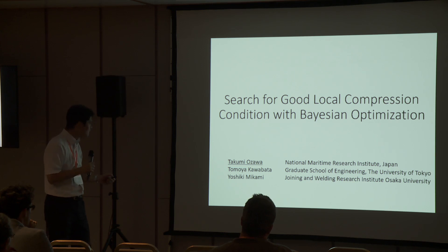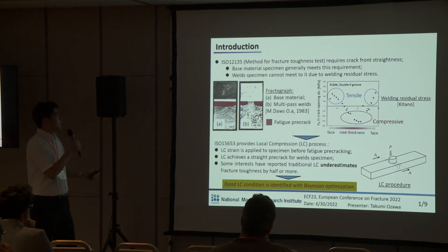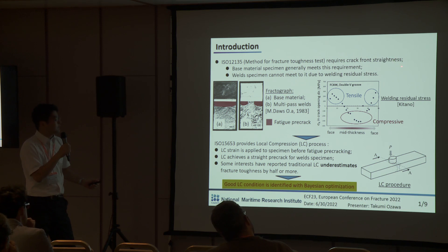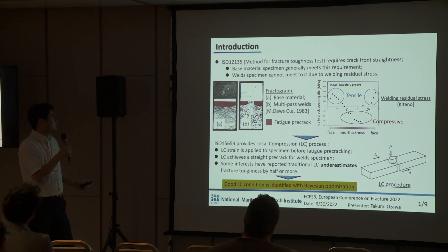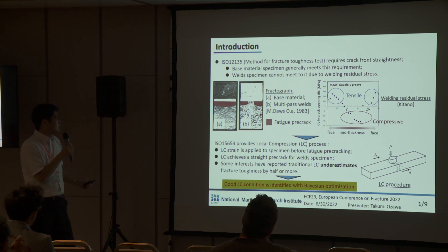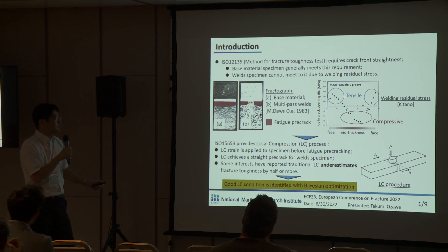ISO 12135, which describes the method for fracture toughness testing, requires crack front straightness. A base material specimen generally meets this requirement. However, a weld specimen cannot meet it due to welding residual stress. This figure shows fractographs after the fracture toughness test — in base material, the fatigue pre-crack is straight.